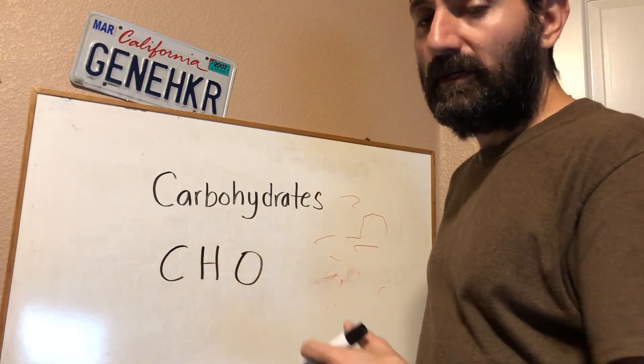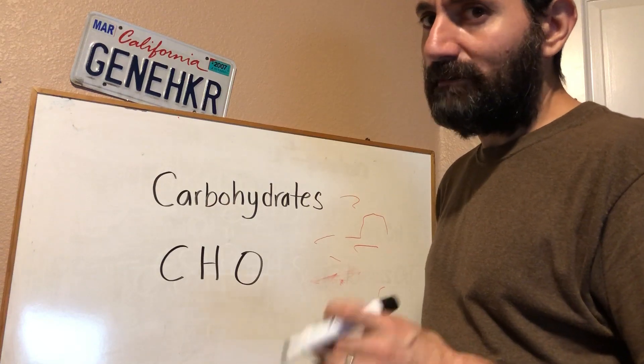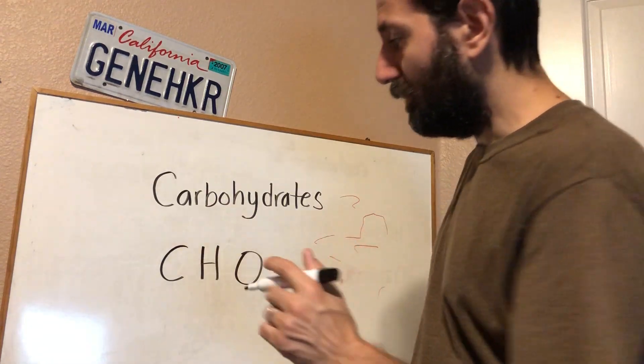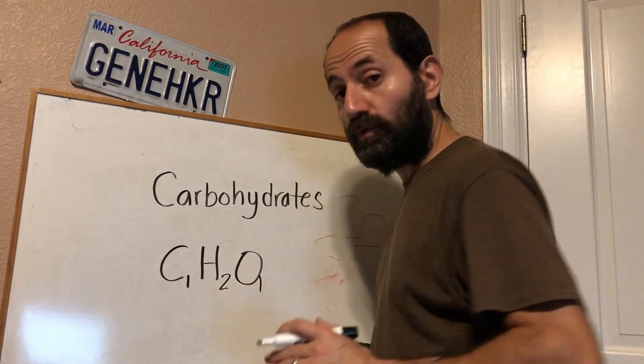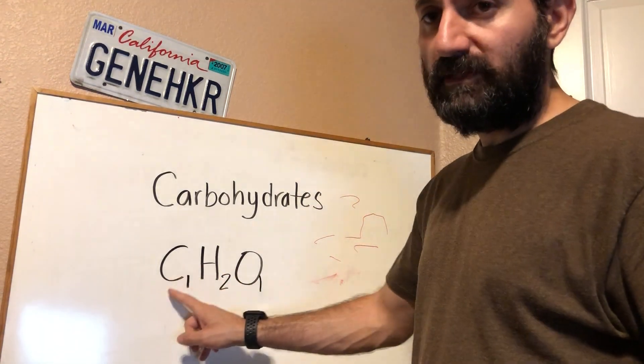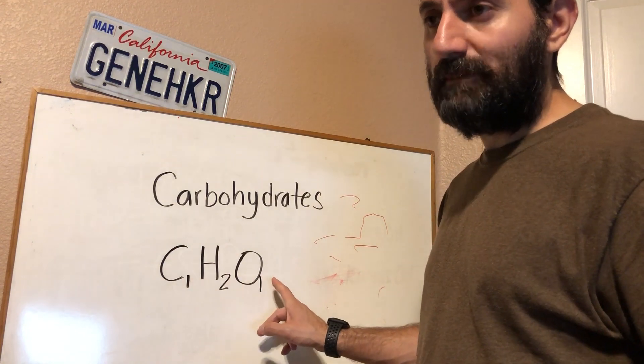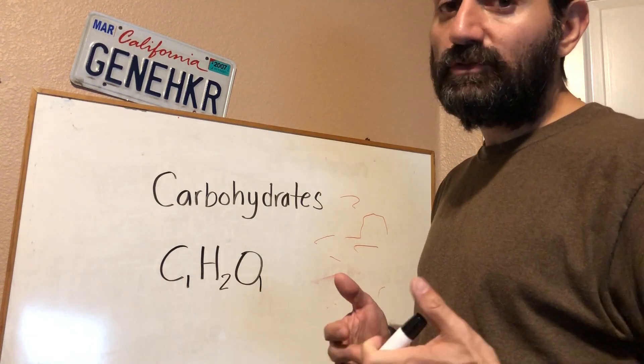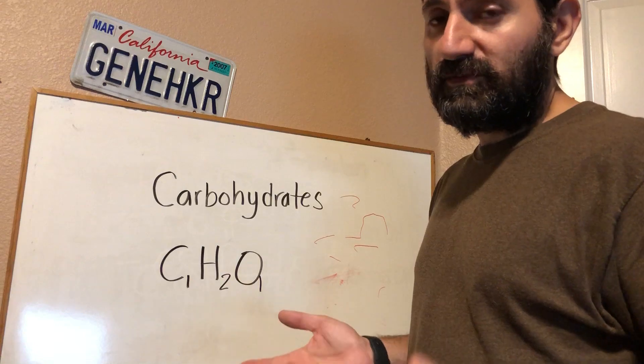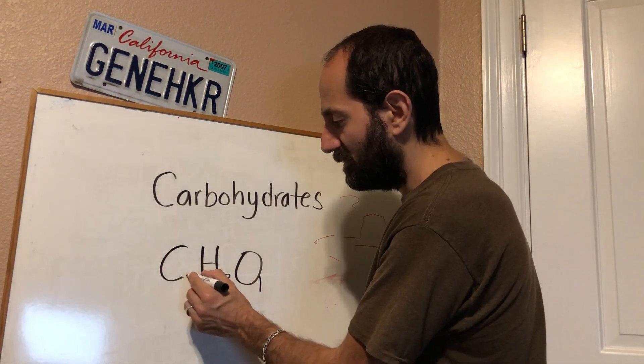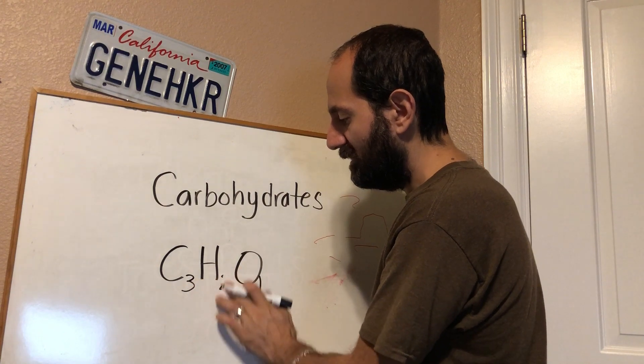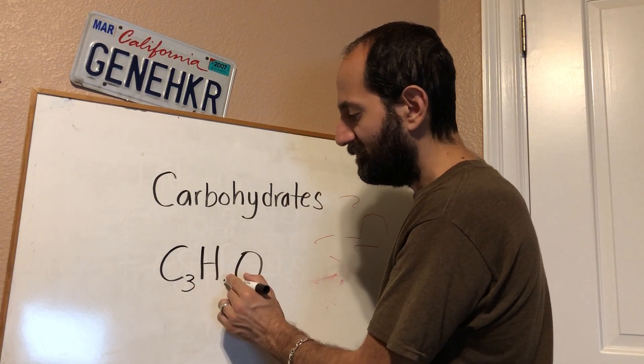And not only that, but what you should realize is that there's a 1 to 2 to 1 ratio of carbons, hydrogens, and oxygens. What does that mean? Well, there are different size sugars. Some sugars are small like three carbons. So for example, a three carbon sugar like glyceraldehyde would be three carbons, and remember there are twice as many hydrogens, so there's six hydrogens and three oxygens.